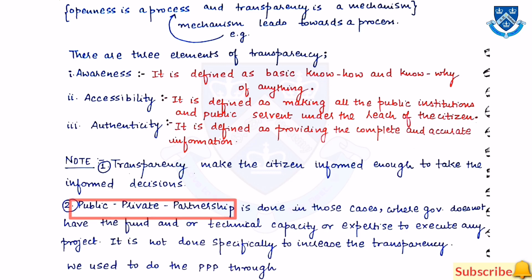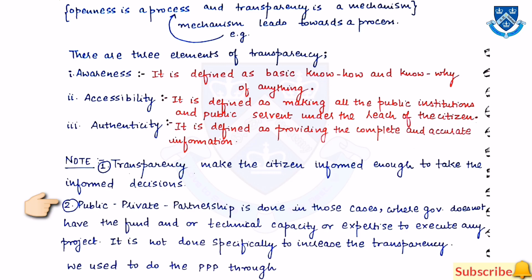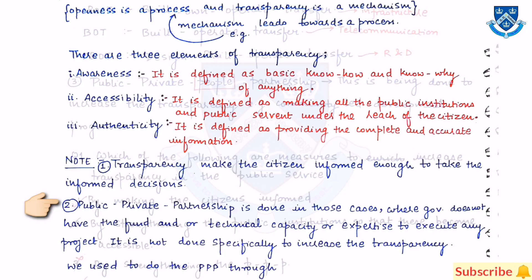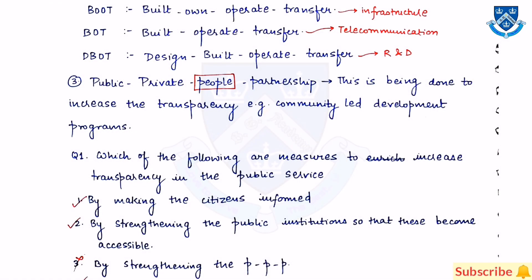The next topic is public-private partnership, known as triple P or PPP. It is used in cases where the government does not have the fund, technical capacity, or expertise to execute any project. It is not done specifically to increase transparency. PPP is implemented through the following terms.